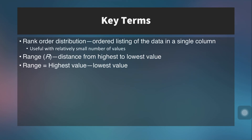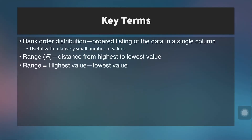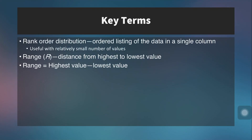Now some key terms to start. The first is rank order distribution — this is an ordered listing of data in a single column, and it's only useful with a relatively small number of values, say 10 to 20, sorted from highest to lowest or lowest to highest. The next is range: the distance from the highest value down to the lowest value, essentially the number of units in between. You calculate it as high value minus low value.